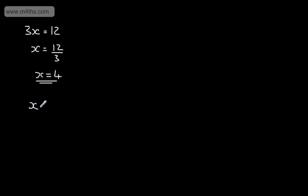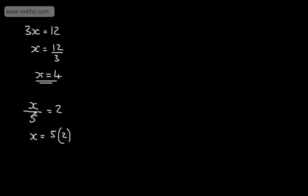If we had now x divided by 5 is equal to 2, we're going to do the inverse. So if this was divided by 5 to give us 2, we can say that x would be equal to 5 times 2. So if it was divided, we multiply; if it was multiplied, we divide. So 5 times 2 gives x equal to 10. That makes sense — 10 divided by 5 does give us 2. So these are very straightforward equations.